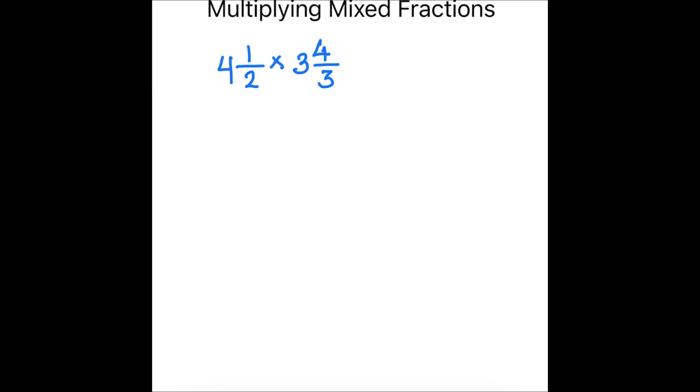Hello students. In this video we are going to learn how to multiply mixed fractions. Let's have an example where we are going to use two numbers: four and one half times three and four thirds. For multiplying mixed fractions, first we are going to convert the mixed fractions into improper fractions. For that, we are going to multiply the denominator with the whole number, then add the numerator to the result.